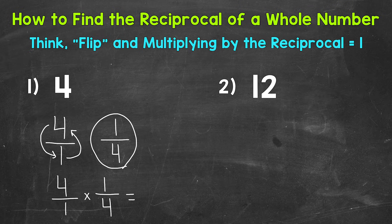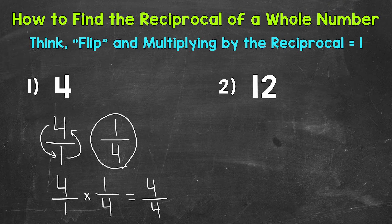So when we multiply fractions, we multiply straight across. Numerators: 4 times 1 is 4. And then denominators: 1 times 4 is 4. Same numerator and denominator equals 1 whole, which is 1. So the reciprocal of 4 is 1 fourth.